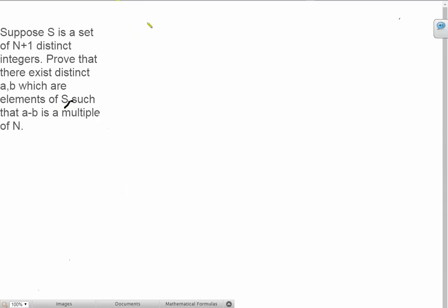Now, for the last and the toughest problem. Suppose S is a set of n plus one distinct integers. Prove that there exists distinct a, b which are elements of S, such that a minus b is a multiple of n.